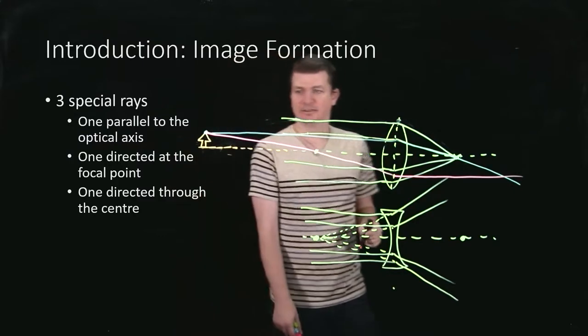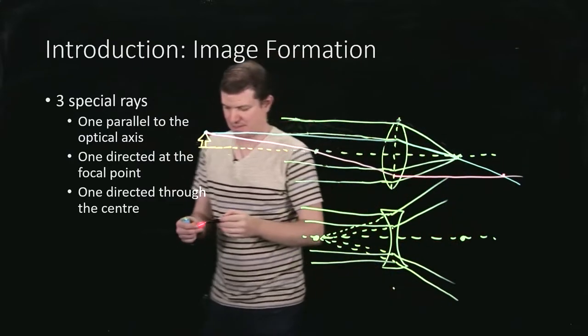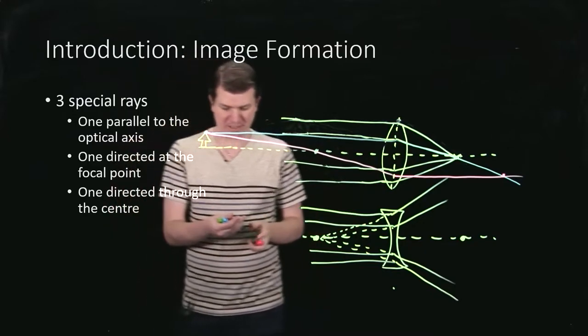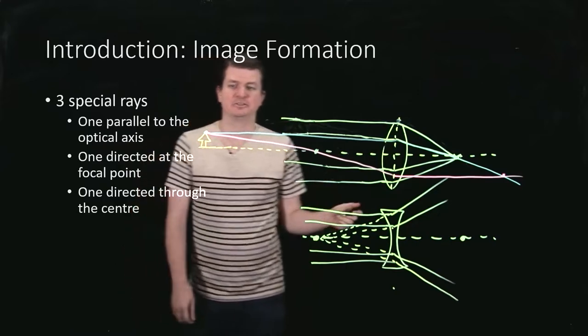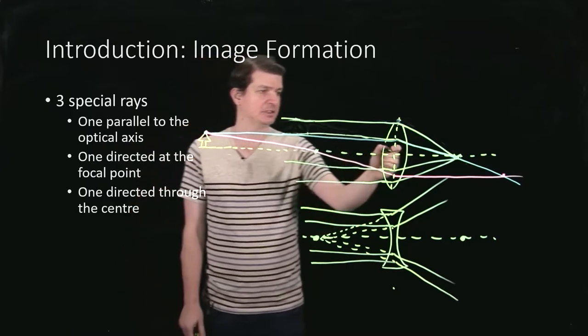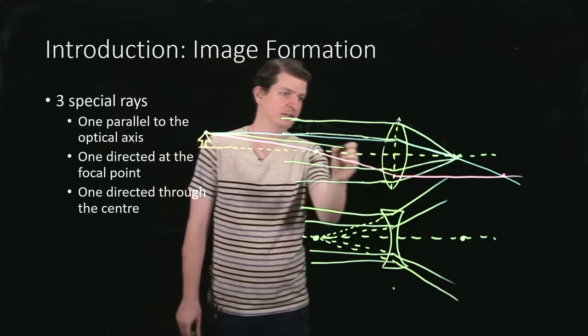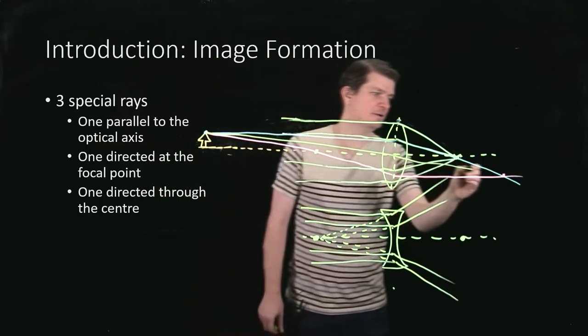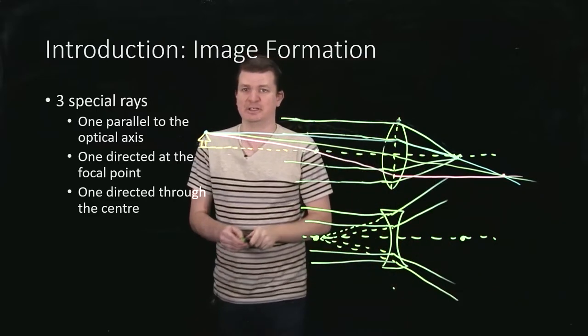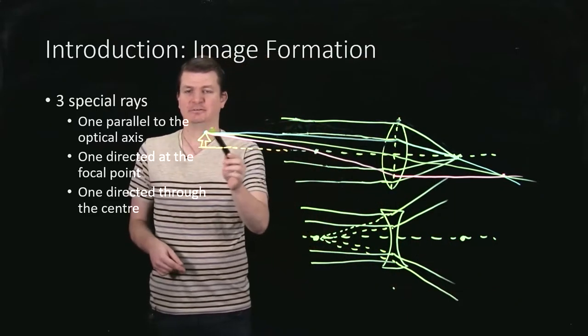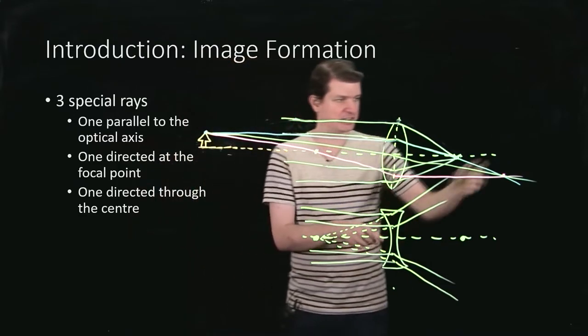We can see that basically we expect our tree is going to end up over here, but we can confirm it with one additional ray. That is the one headed straight towards the center of the lens from the top of the tree. As we do that, we see it indeed intersects over there as well. So all of the rays leaving the top of this thing will actually follow and intersect over here.